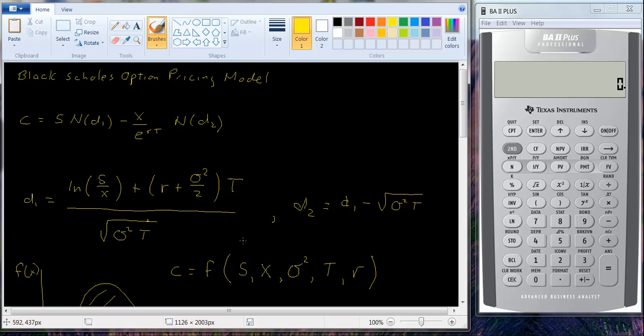Well there's a positive relationship between stock price and call option value. The higher the stock price, the more valuable the call option, because you can buy it at the exercise price regardless of what the price of the stock is. So the higher the price of the stock, the more valuable it is. It's negatively related to the exercise price, because that's the buy price. The cheaper you can buy it for, the better.